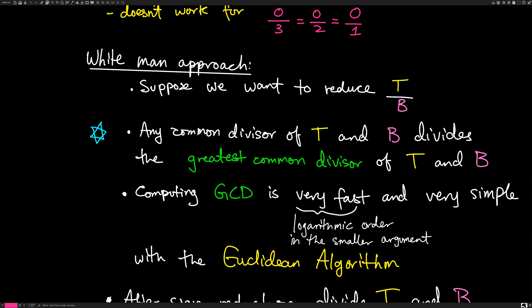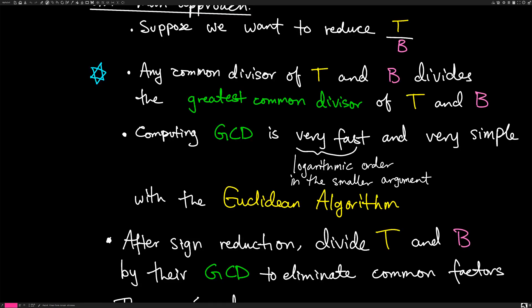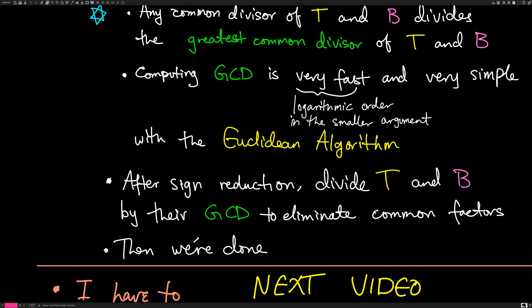The algorithm to compute the GCD is called the Euclidean algorithm. So basically what we're going to be doing: first, fix the sign problem by making sure the denominator is positive. Then, after sign reduction, we divide both T and B by their GCD — because any common divisor divides the greatest common divisor, so dividing out by the GCD removes all common factors, and then we're done.